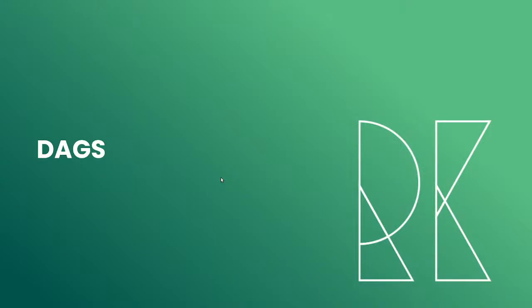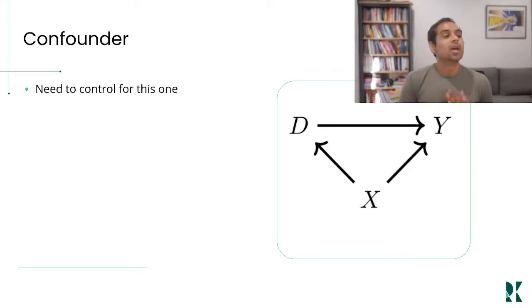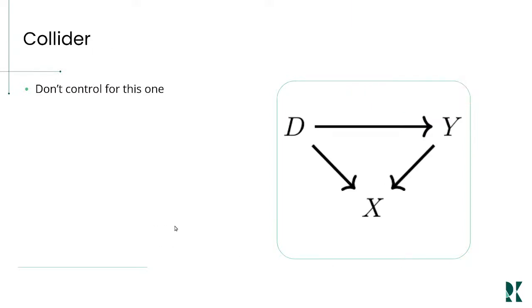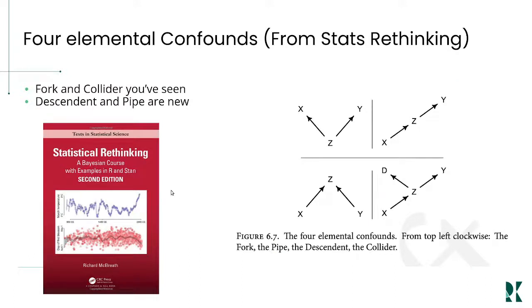The first topic of this chapter was Directed Acyclic Graphs — hard to avoid, that's what the whole chapter was about. In this particular book there were two types: confounders, where the arrows go in, and colliders, where two arrows go down and the other one goes to the right.